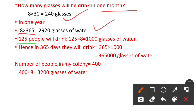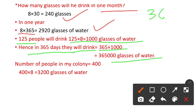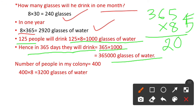In 365 days, 365 ko 8 se multiply karenge: 8×5=40 carry 4; 8×6=48 plus 4=52 write 2 carry 5; 8×3=24 plus 5=29. So 2,920 glasses of water.